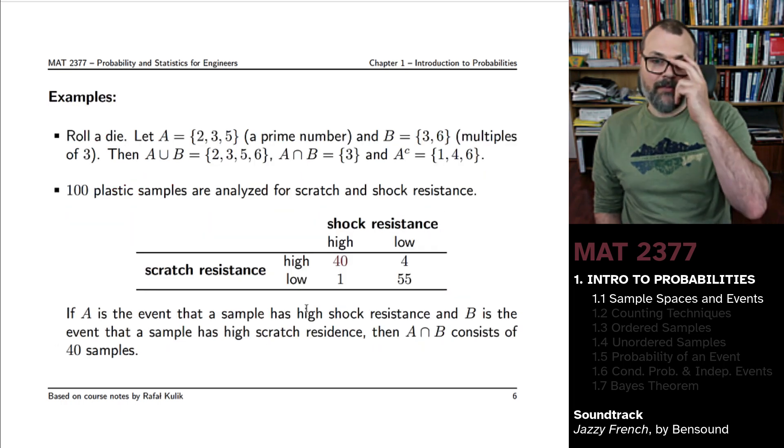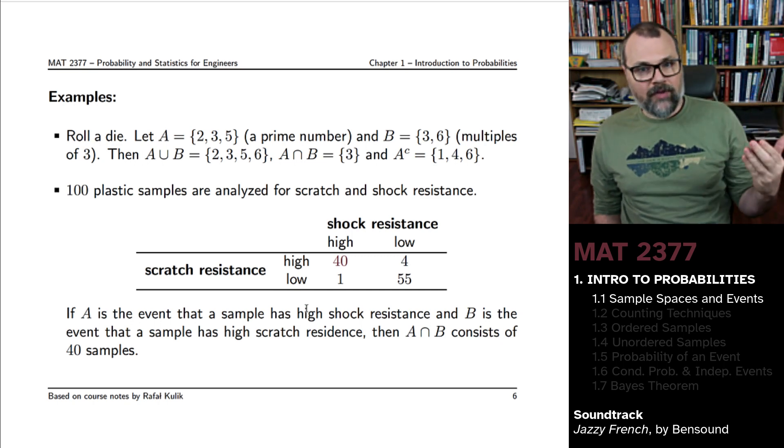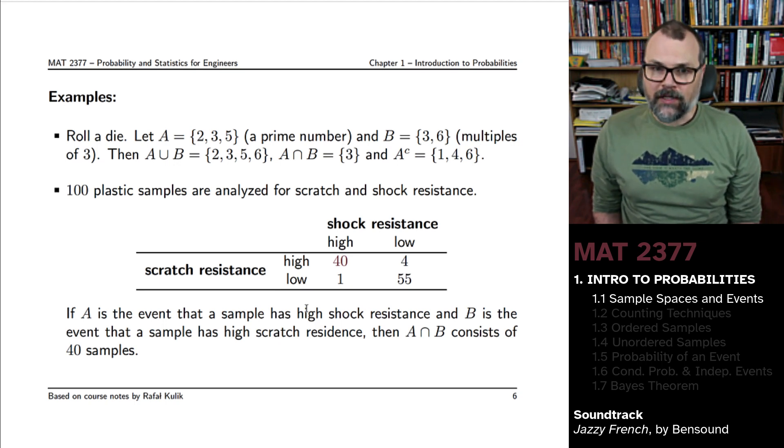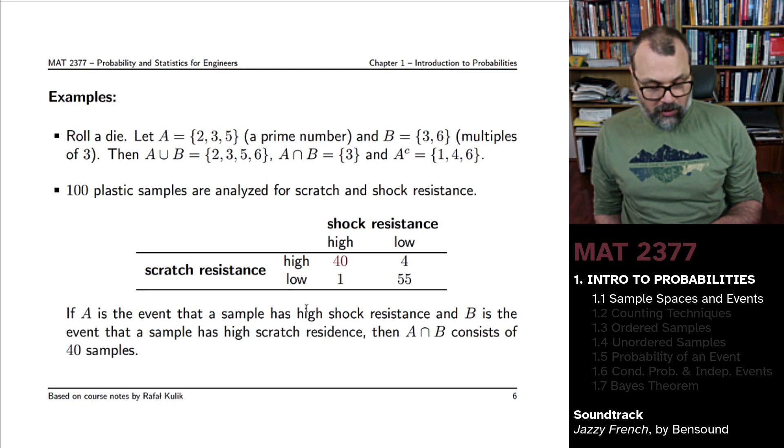Here's an example for us. Let's say you roll a die. Our first event will be A, that you roll a prime number. We've seen that there's three such outcomes that correspond to that event: two, three, five. And the second event, B, might be that you roll a multiple of three, and there's only two such events.